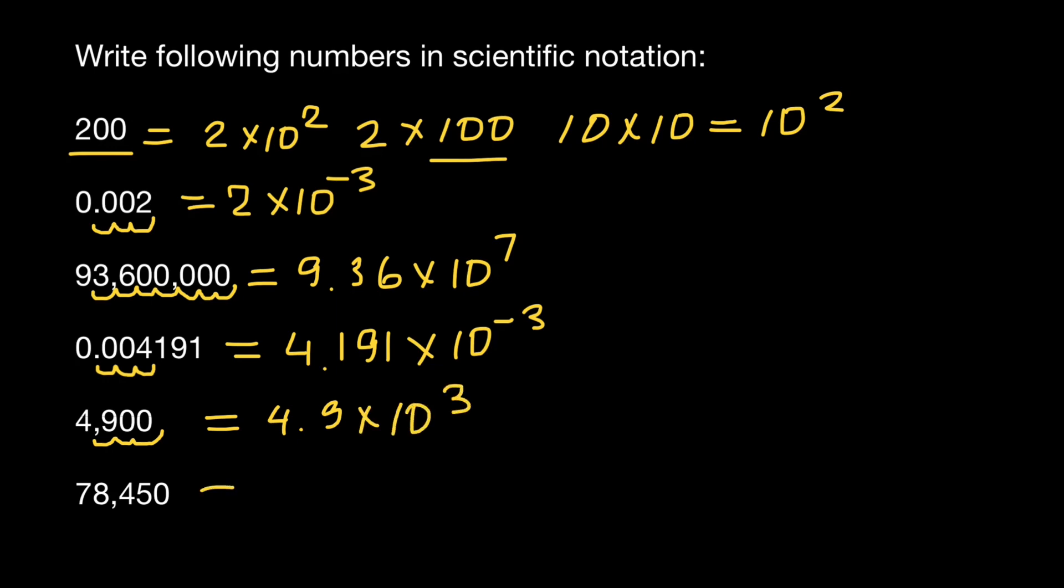And the last number, 1, 2, 3, 4. So we are going to get 7.845 times 10 to the power of 4. We do not include the 0 because 0 is not a significant number here. But if 0 would be somewhere in the middle between these numbers, this is going to be significant.